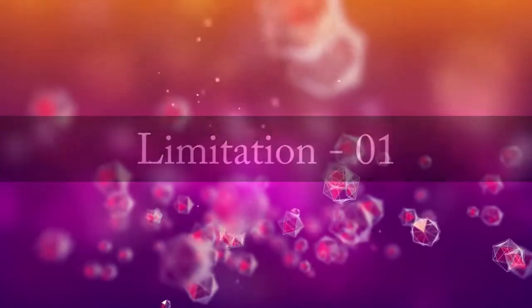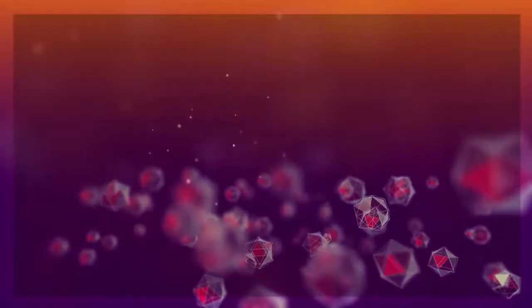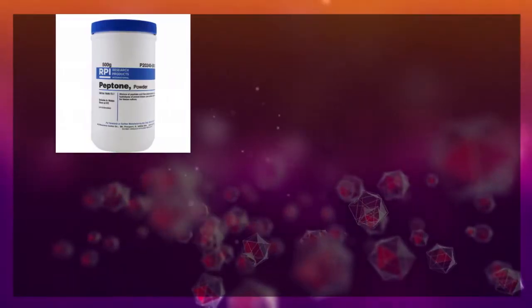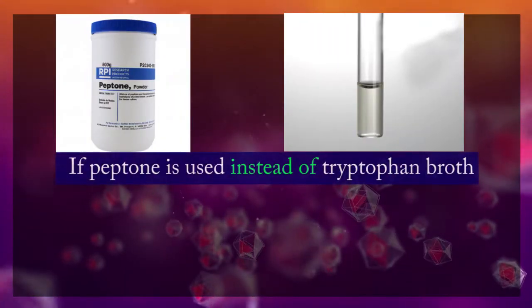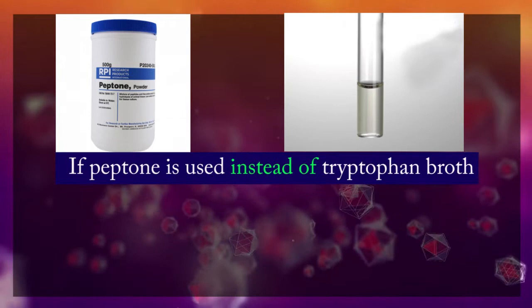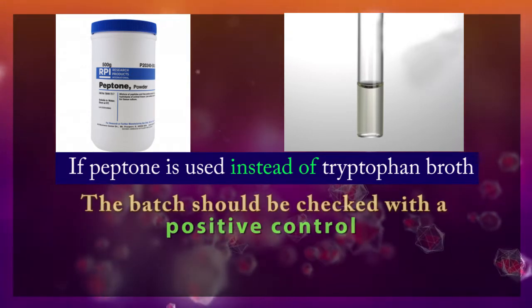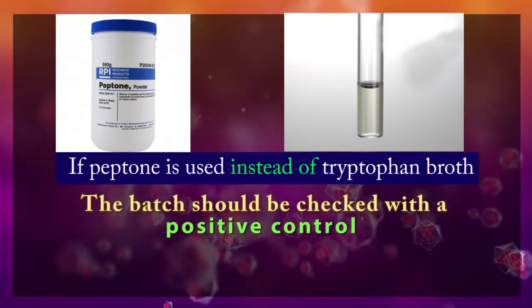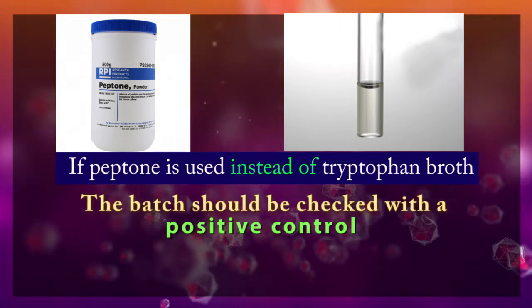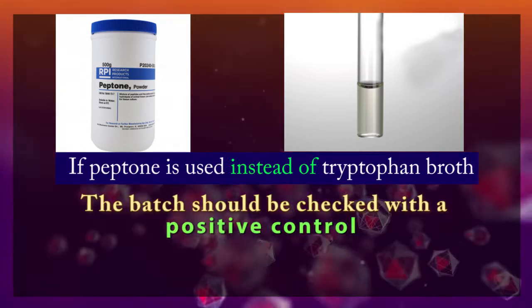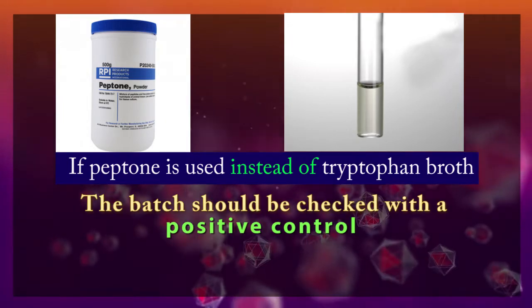If peptone is used instead of tryptophan broth, the batch should be checked with a positive control to ensure the peptone is adequate for indole production.